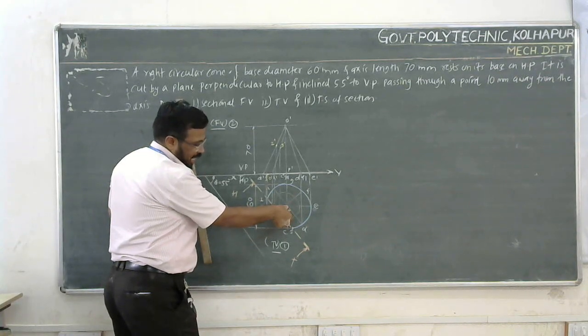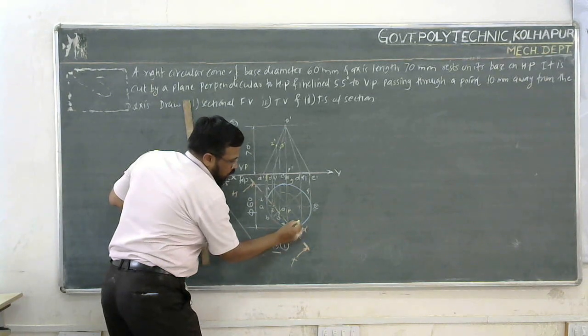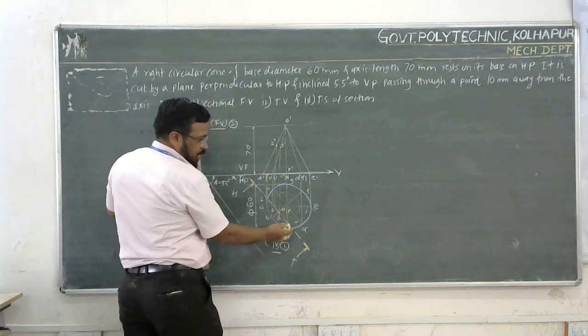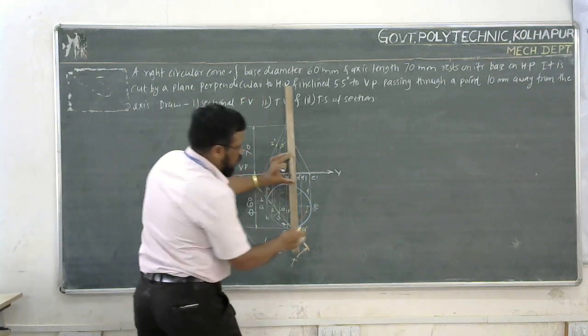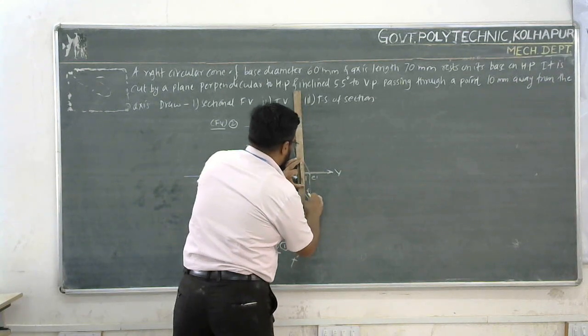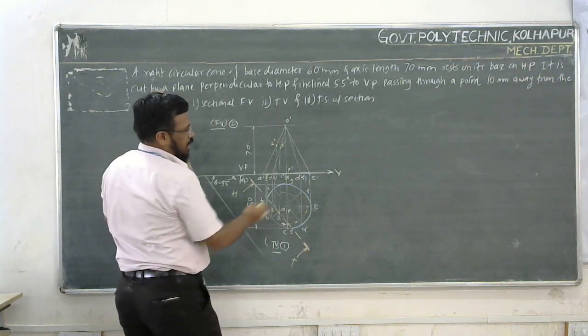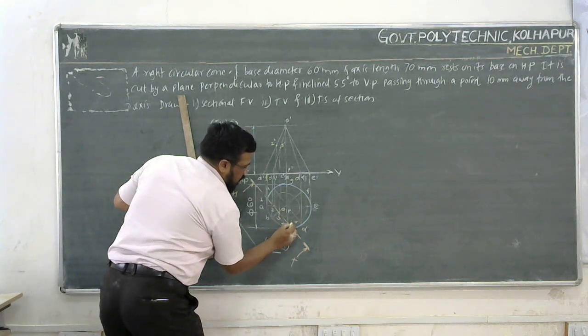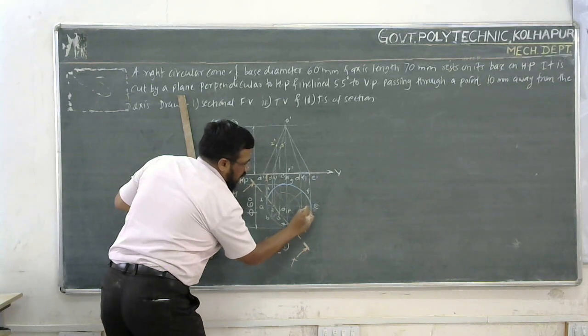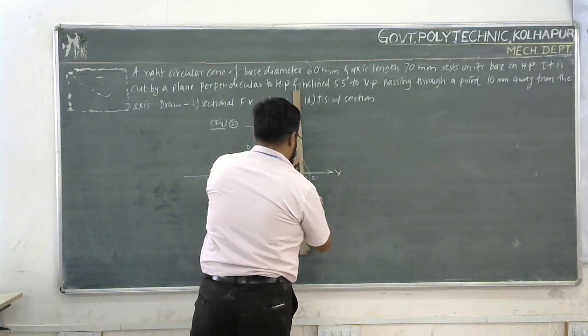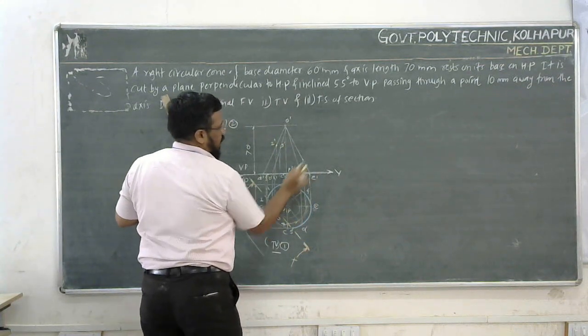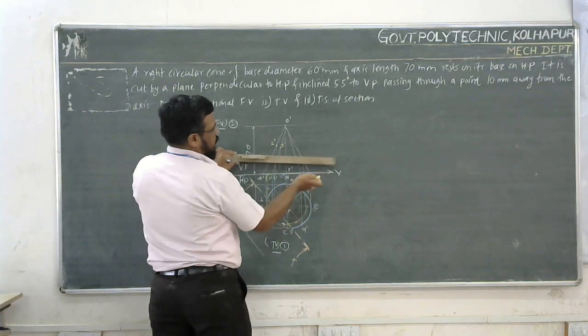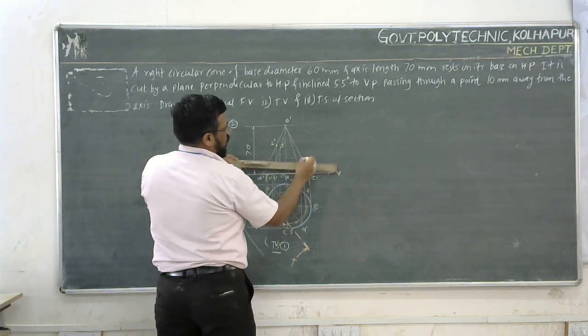Now we project these points to front view. Point 1 projects to 1 dash. Point 2 projects to 2 dash on line OA. Point 3 projects to 3 dash. Point 4 on OC projects to 4 dash. Point 5 projects to 5 dash.